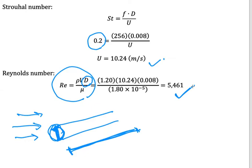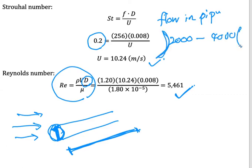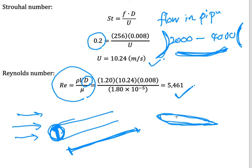Then you can choose the correct region — whether laminar or turbulent. Normally, for flow in a pipe, the transition region is between 2,000 and 4,000. But this situation is not flow in a pipe; it is flow around a bluff body, similar to flow around an aerofoil. For external flow, the boundary between laminar and turbulent is 5×10⁵. So a Reynolds number of 5,400 is still considered laminar flow in this situation.